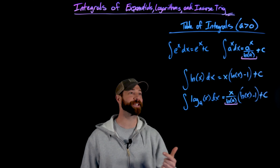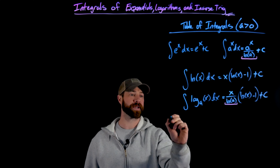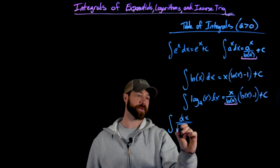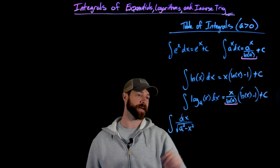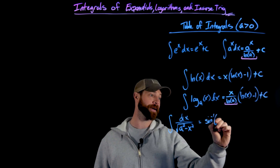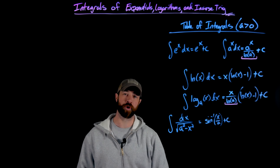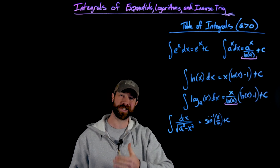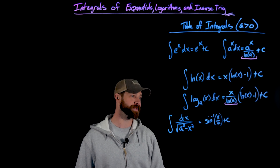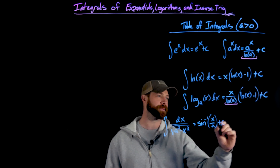Now we have the exponentials and logarithmics. Let's talk about some important inverse trig functions. First, the integral of dx over the square root of a squared minus x squared — this is sine inverse of x over a, plus c. This is a more general form where we have this value a, not just 1. In that case, we get this division inside the sine inverse, which should make sense from knowing the derivative of the sine inverse function.